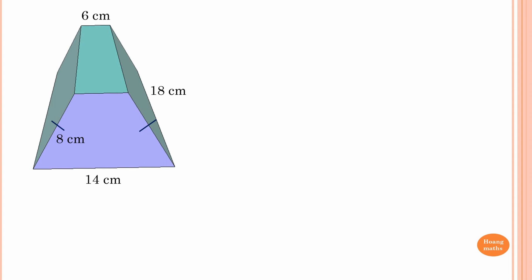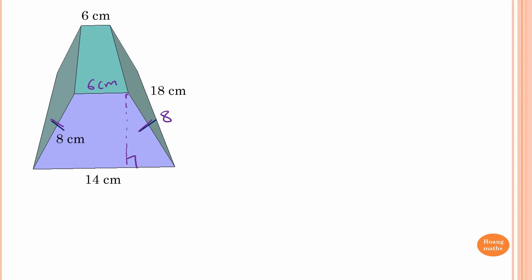We know that volume of any solid is area times height. But to find the area of this trapezium, we need to find the perpendicular height first. So we construct a perpendicular line. Because this length equals this length, this side must be 8, and this is 6 centimeters. The bottom is 14, and the top is 6, so 14 minus 6 equals 8. These two equal parts split as 4 centimeters each.